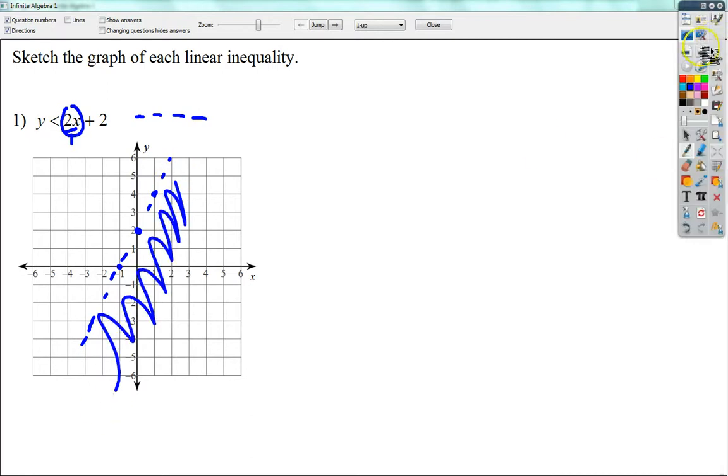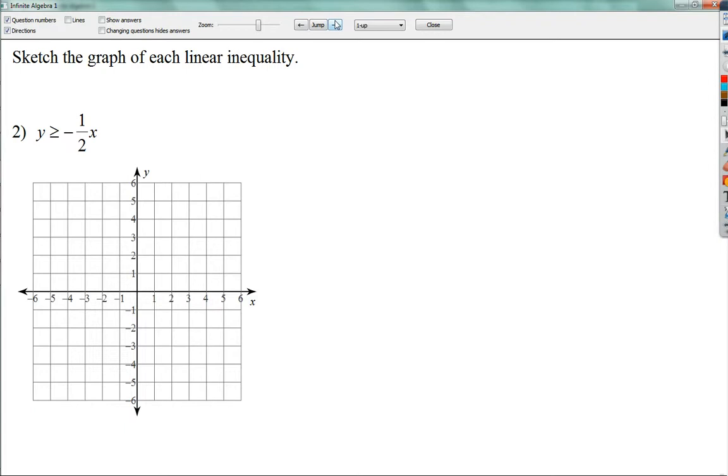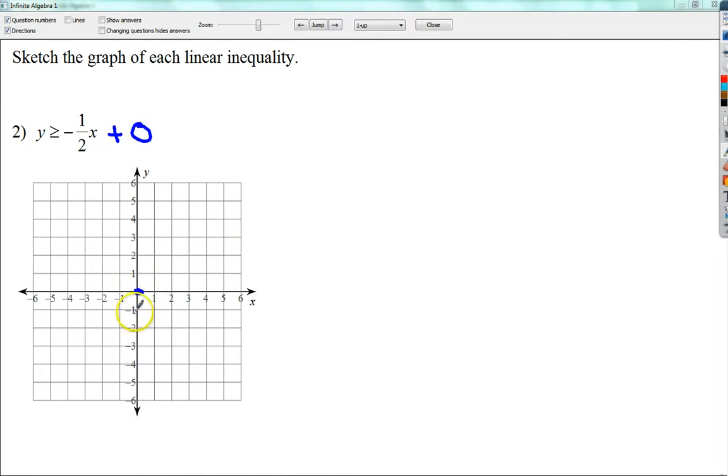The next one tells me that I need to do y is greater than or equal to negative 1 half. So, in this case, I'm going to go to 0, and I'm going to go down 1 and right 2, or up 1 and left 2. I was thinking of multiple things. Now, this has a line under it, so I'm going to make a solid line. And y is greater than, so I'm going to shade up.